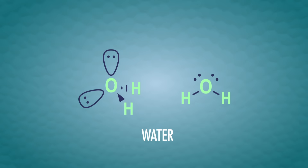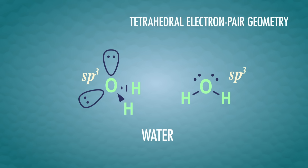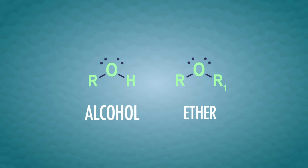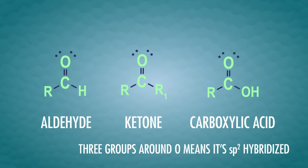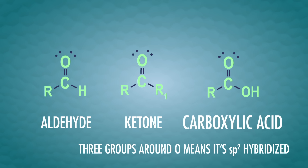Organic chemistry is all about carbon, but other elements have their own electron pair geometries and hybrid orbitals too. For example, oxygen in a water molecule is similar to methane — the central oxygen atom is SP3 hybridized, with sigma bonds to two hydrogen atoms and two lone pairs. This gives water a tetrahedral electron pair geometry and a bent molecular shape. Oxygen is often SP3 hybridized and forms single bonds in organic compounds like alcohols and ethers, but it can also be SP2 hybridized and form double bonds as a carbonyl group, which we see in aldehydes, ketones, and carboxylic acids.